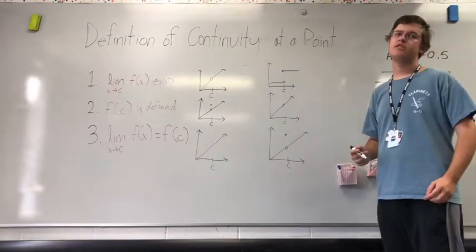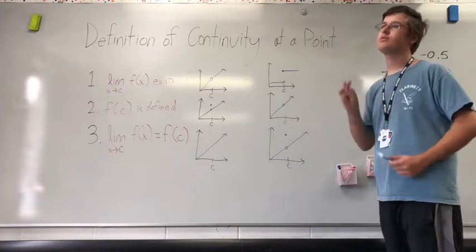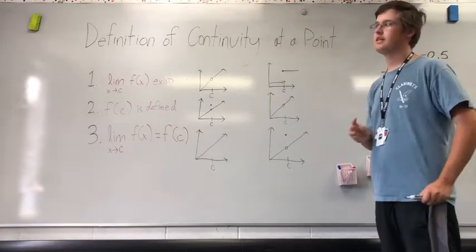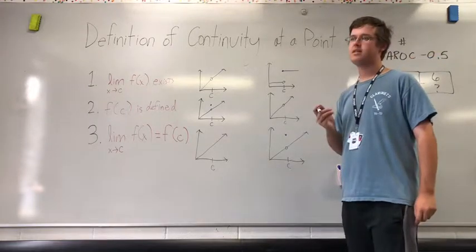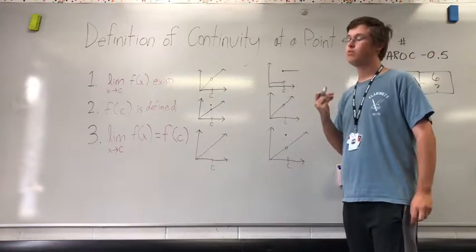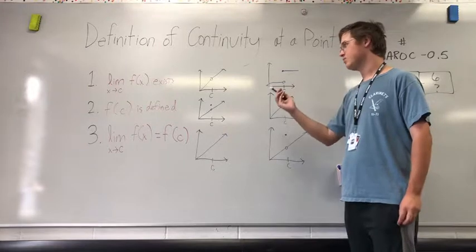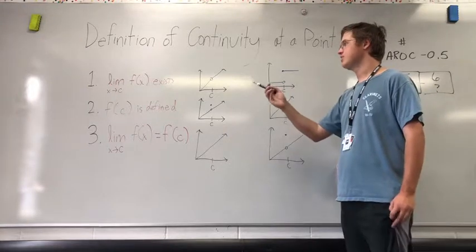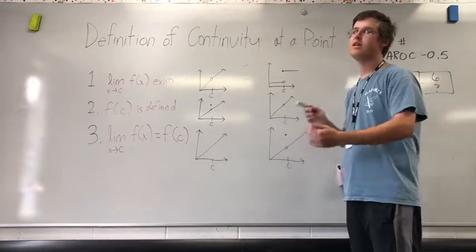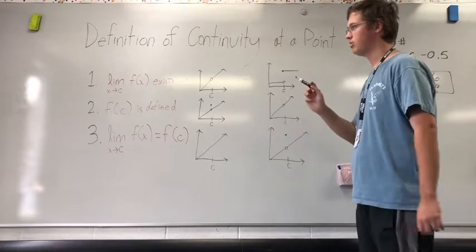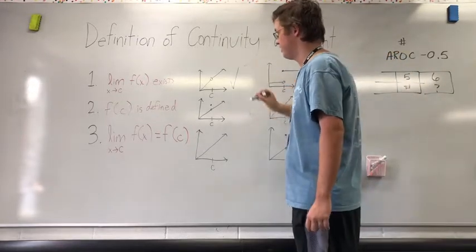In order for a point to be considered continuous, there are three stipulations it has to meet. The first one is that a limit at that point exists. In this case, as x approaches c, there is a limit here, as the approach on the left equals the approach on the right. So this does meet the first stipulation.